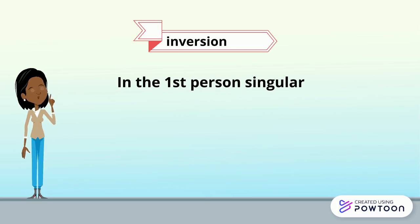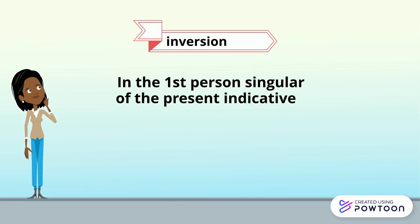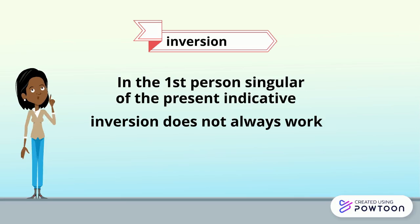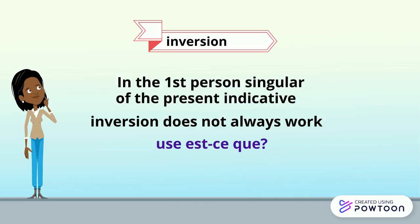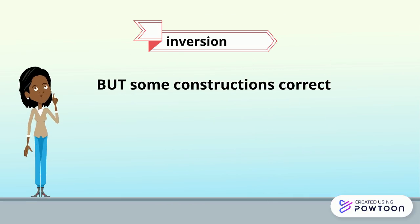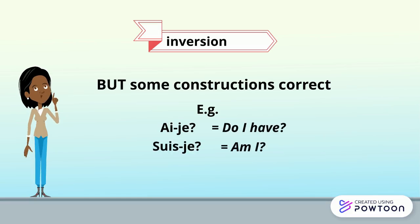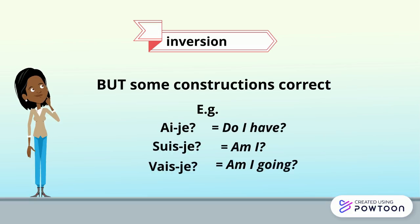In the first person singular of the present indicative, the inversion does not always work. It is better to use the expression est-ce que. However, there are a few constructions that are correct — for instance: "ai-je?" — do I have? "suis-je?" — am I? Or "vais-je?" — am I going?